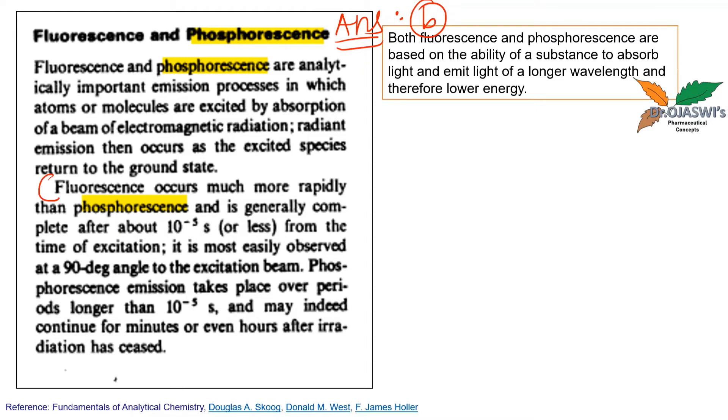One important point I want to bring to your notice: fluorescence occurs much more rapidly than phosphorescence and is generally complete after about 10 to the minus 5 seconds from the time of excitation. This means, suppose I have this substance here, this is some phosphorescent material, and if I am keeping a light source continuously on, suppose this is UV light.